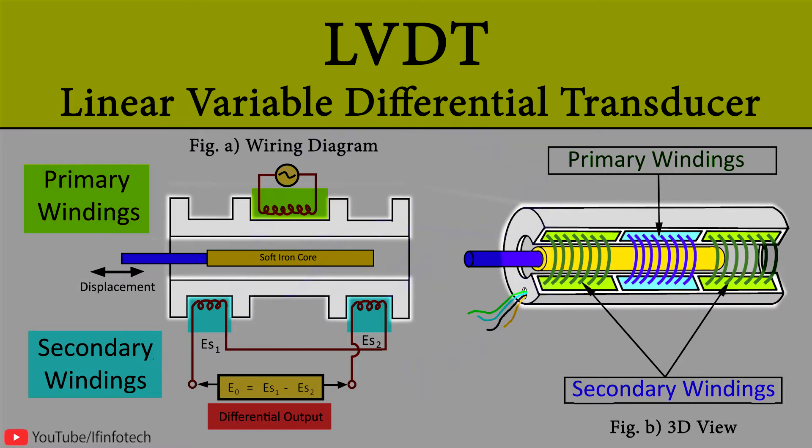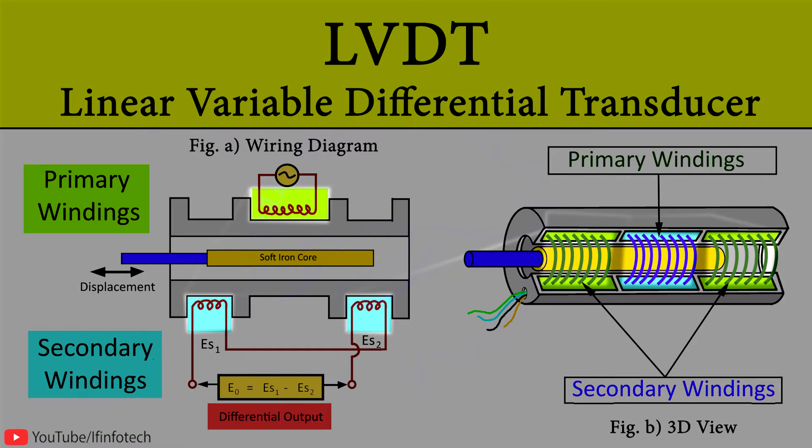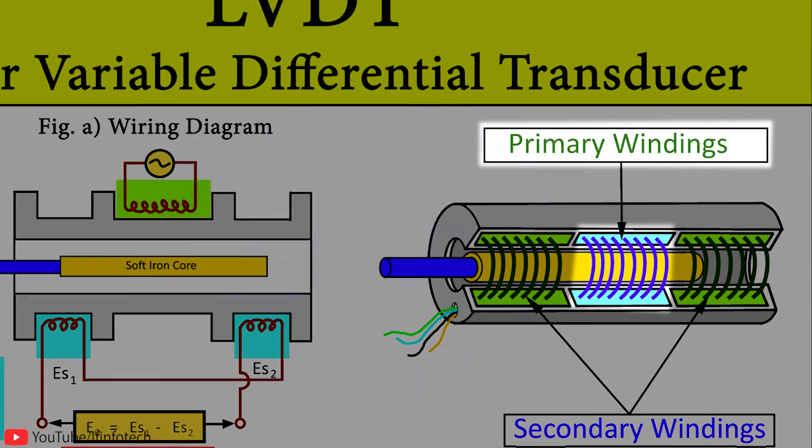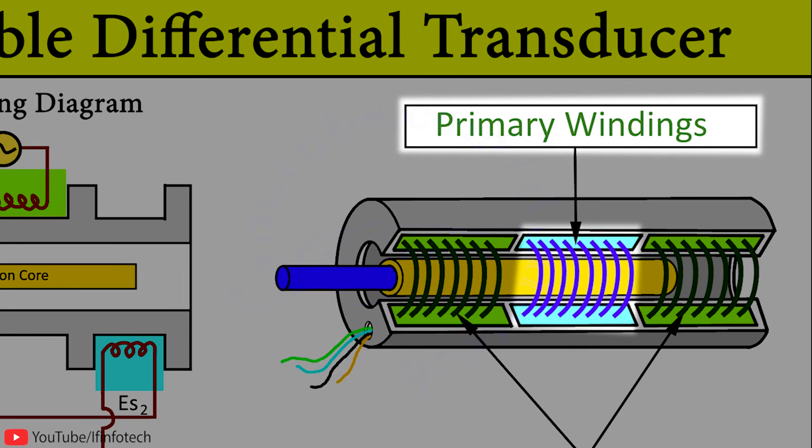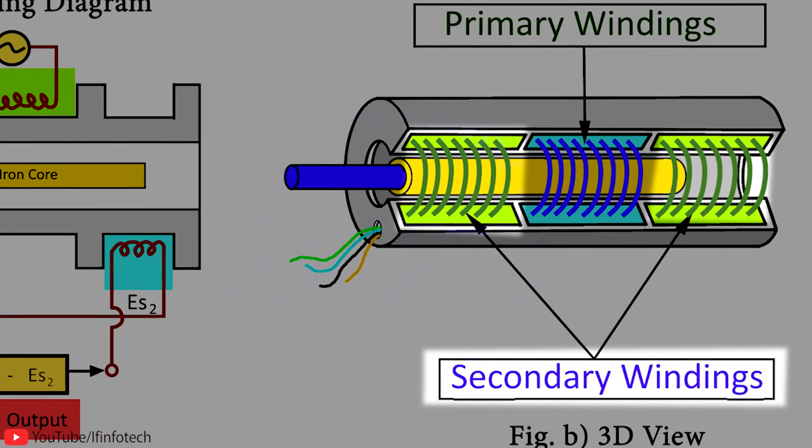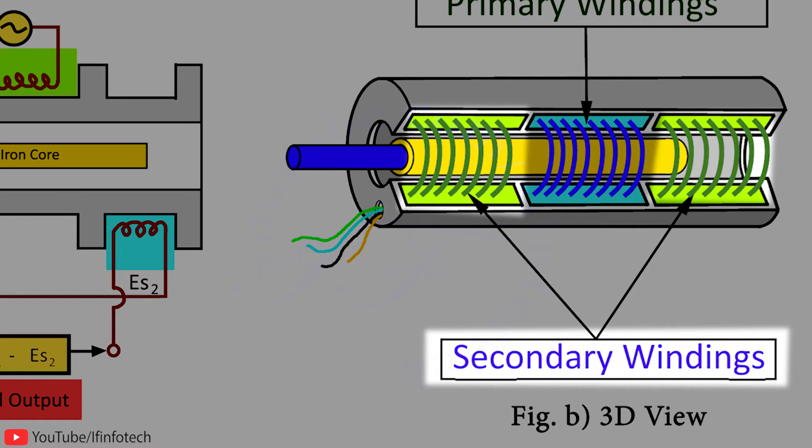It consists of an insulating hollow cylinder made up of bakelite. On the insulating cylinder, two windings are wound called primary and secondary windings. The primary winding is wound at the center of the insulating cylinder, and on either side of the primary winding, two secondary windings S1 and S2 having equal number of turns are wound. The direction of secondary windings S1 and S2 are exactly opposite to each other.